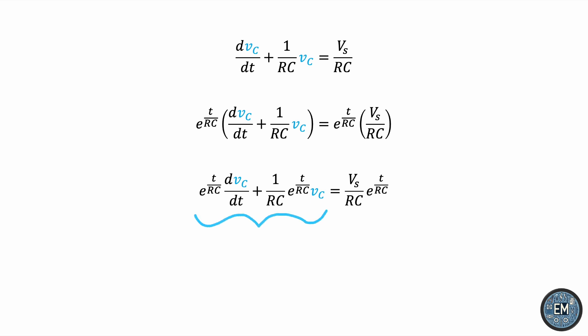Take some time and verify that this is actually the time derivative of VC times the exponential. It's the product rule: derivative of the first times the second plus the derivative of the second times the first. Now let's integrate both sides to solve for VC.